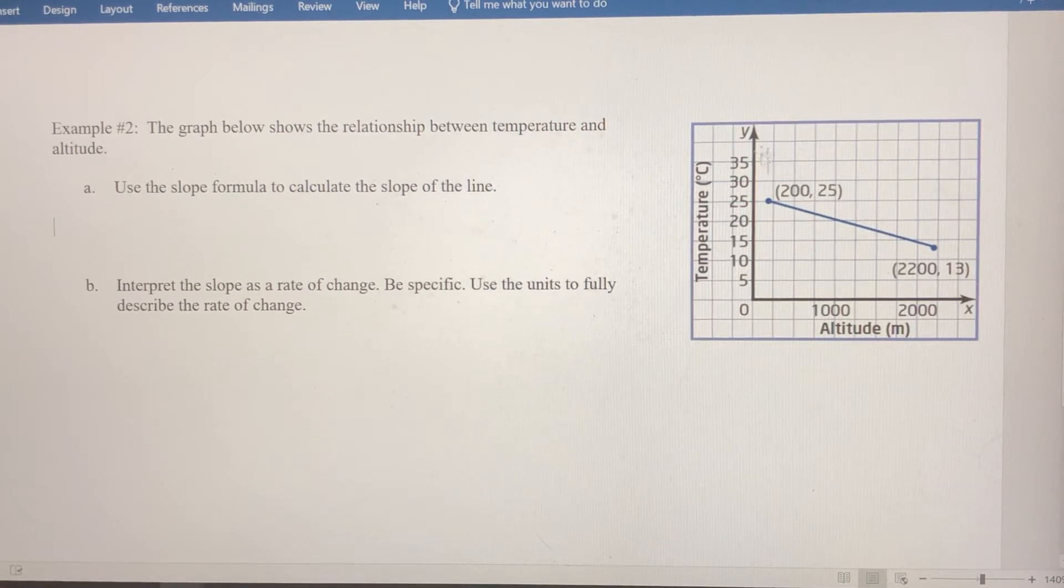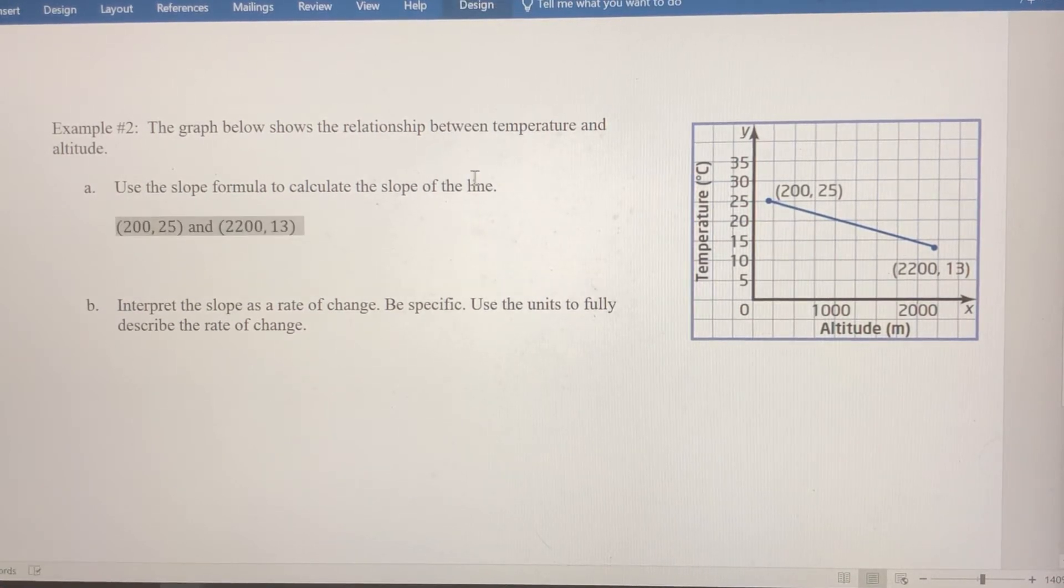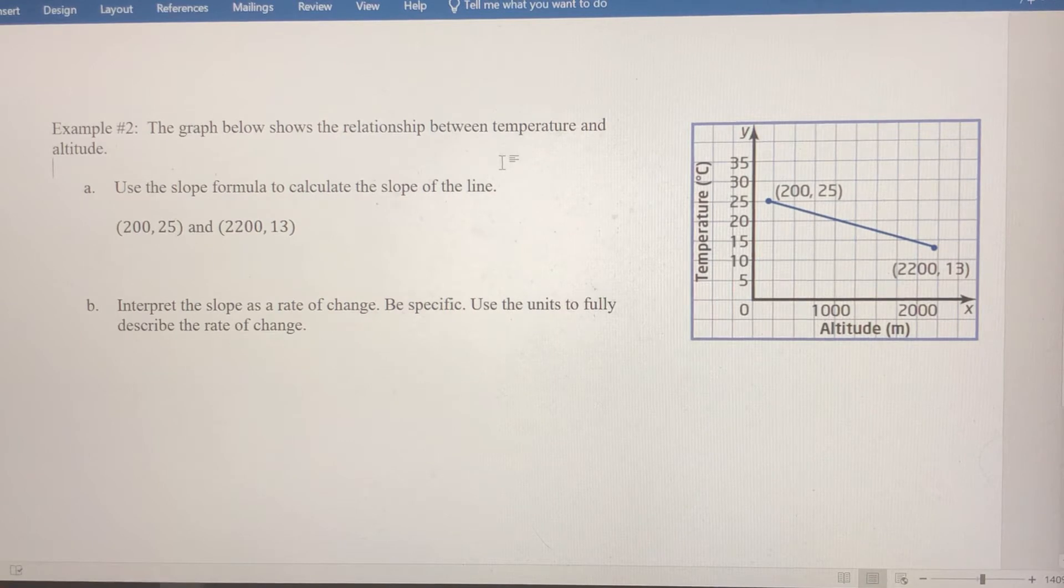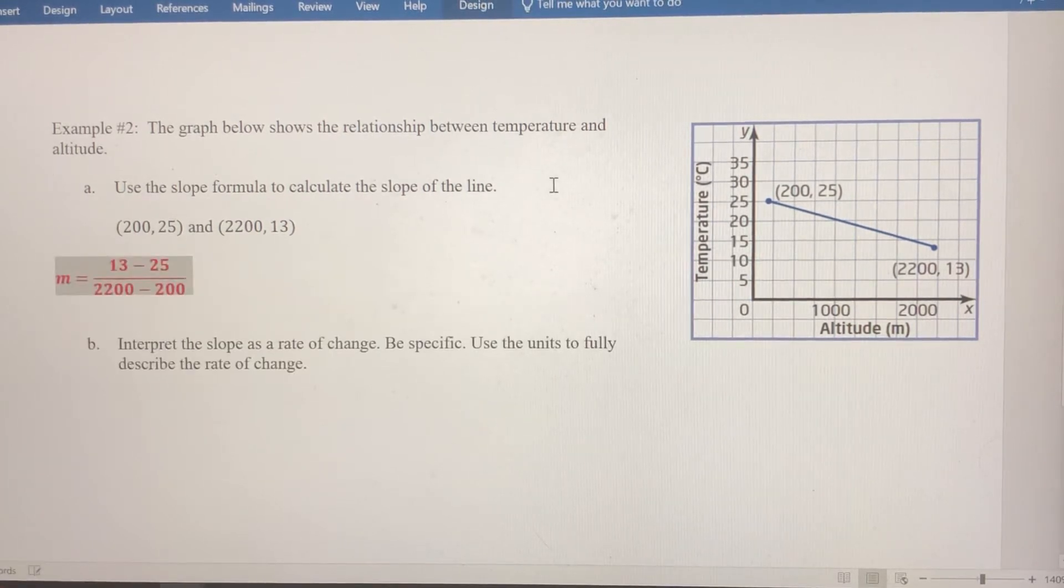So on the line, we know two ordered pairs. So we always want to account for the ordered pairs that we know. And we're going to use the slope formula to find the slope of this line and therefore to find the rate of change of the temperature compared to the altitude.